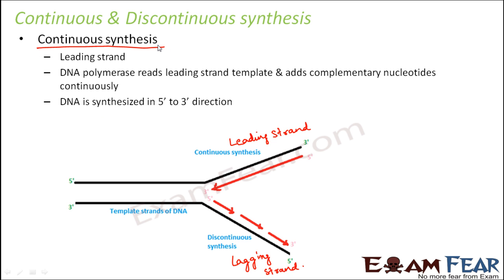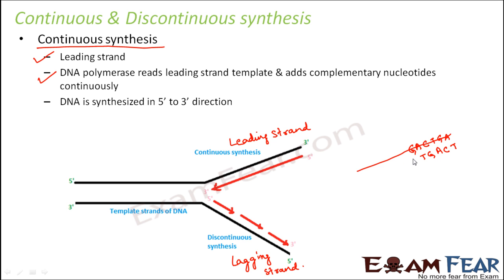Let us first talk about continuous synthesis because it is comparatively simpler. Continuous synthesis happens on the leading strand. Here, the DNA polymerase reads the leading strand template and adds complementary nucleotides continuously. It reads the sequence of bases on this strand and keeps on creating the new bases on the other side, and that is how the new strand is formed, creating a new copy of DNA.